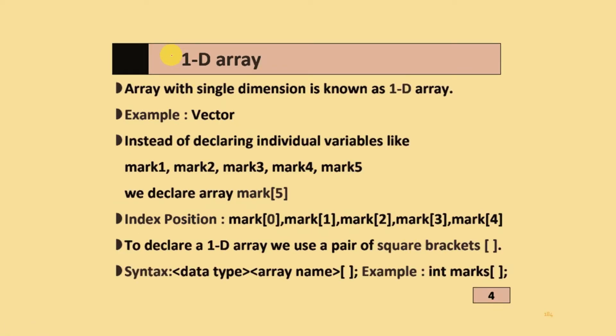1D Array: Array with single dimension is known as 1D array. Example is vector. Instead of declaring individual variables like mark1, mark2, mark3, mark4, mark5, you directly declare array as mark in square bracket 5.